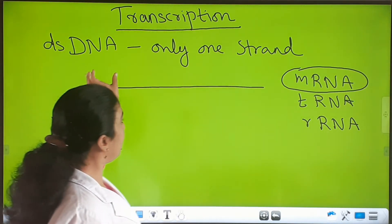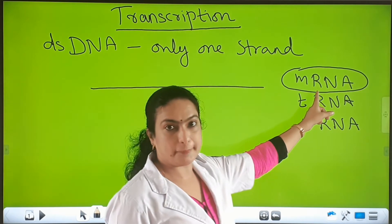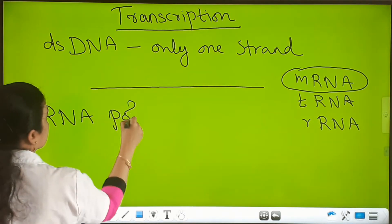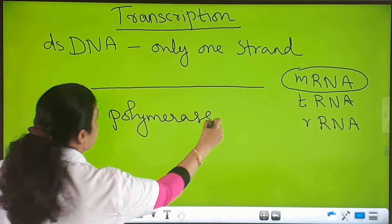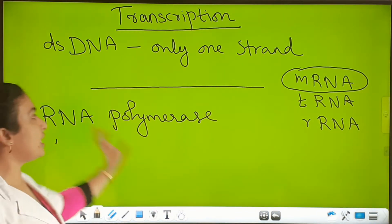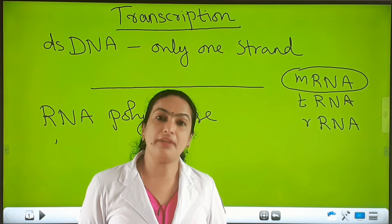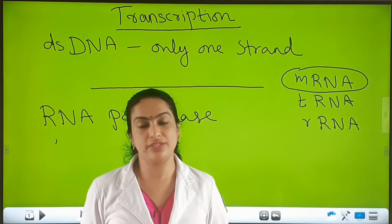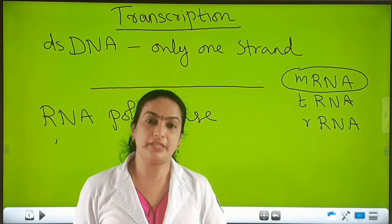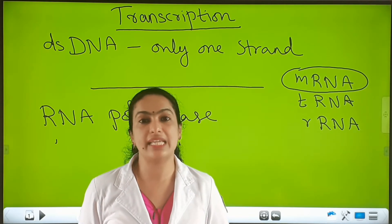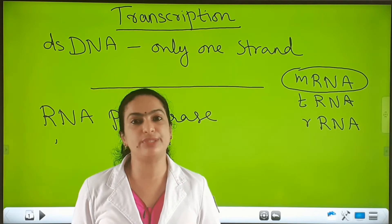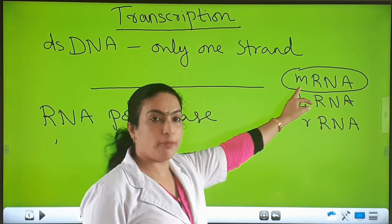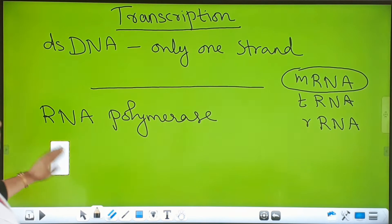The genetic information is copied from DNA to mRNA, and the enzyme involved is RNA polymerase, also called DNA-dependent RNA polymerase. The enzyme used in DNA replication was DNA polymerase, or DNA-dependent DNA polymerase. For transcription or mRNA formation, it is the DNA-dependent RNA polymerase.